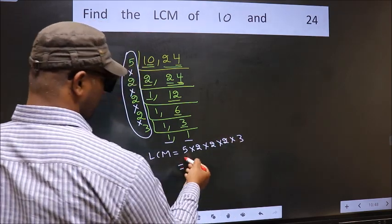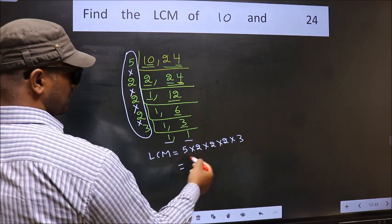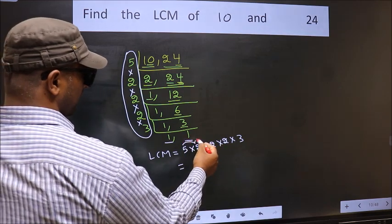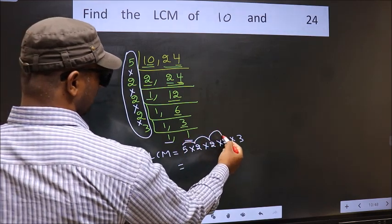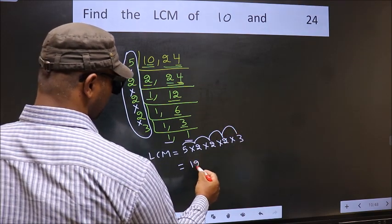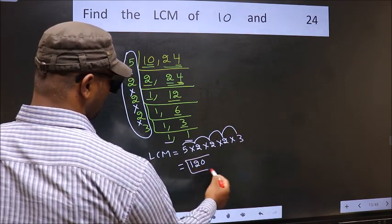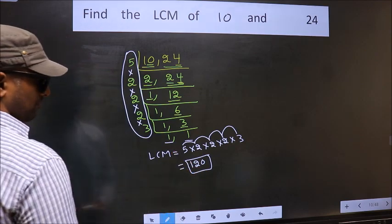That is 5 into 2 into 2 into 2 into 2 into 2 into 3. So let us multiply these numbers: 5 into 2 is 10, into 2 is 20, into 2 is 40, into 3 is 120. So 120 is our LCM.